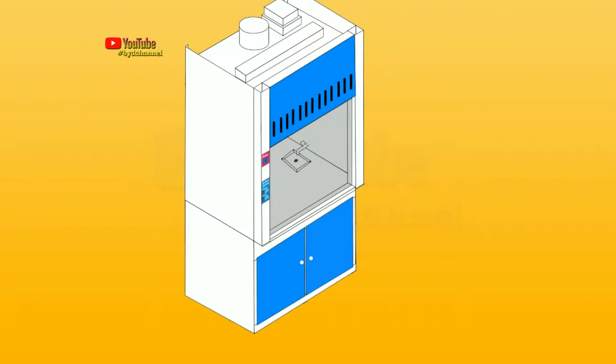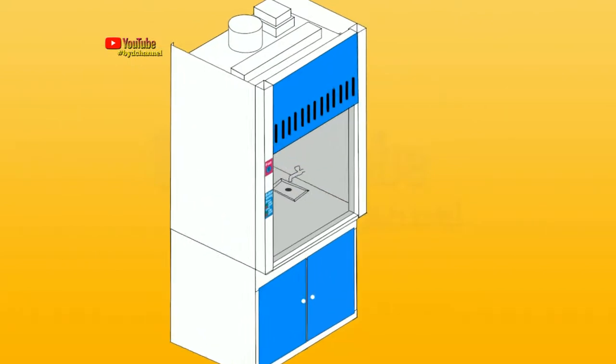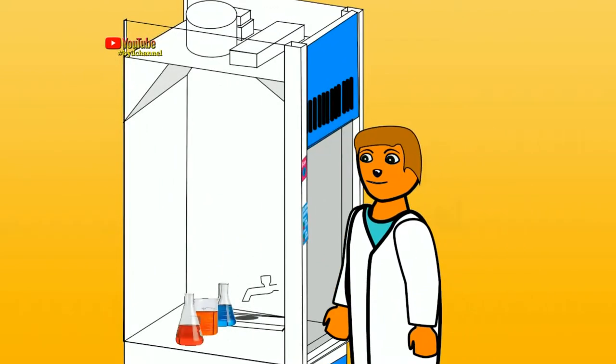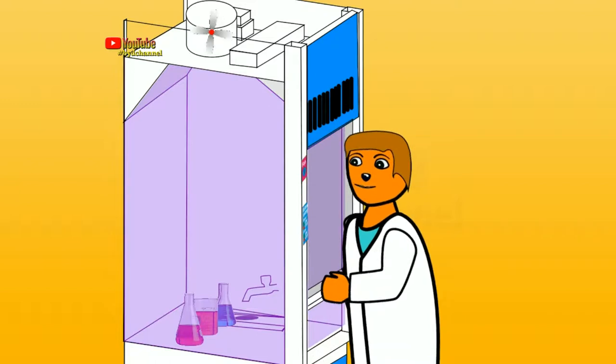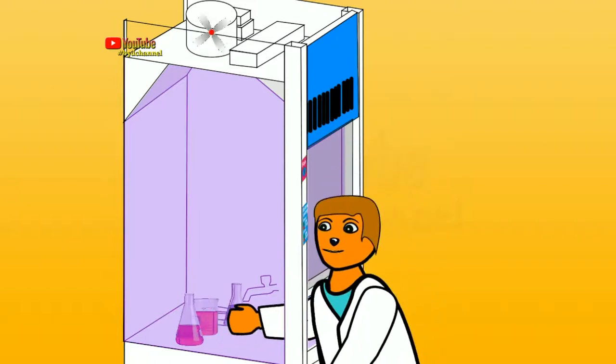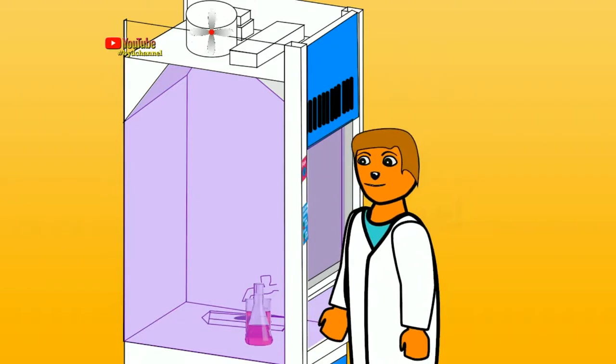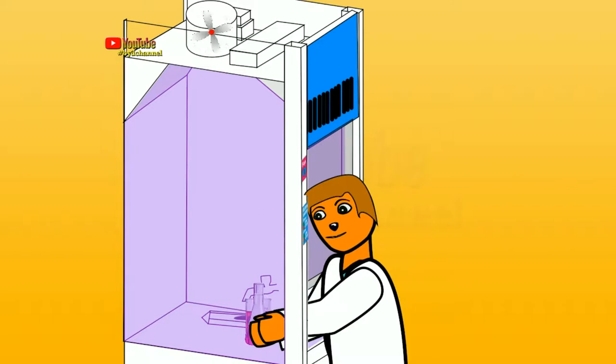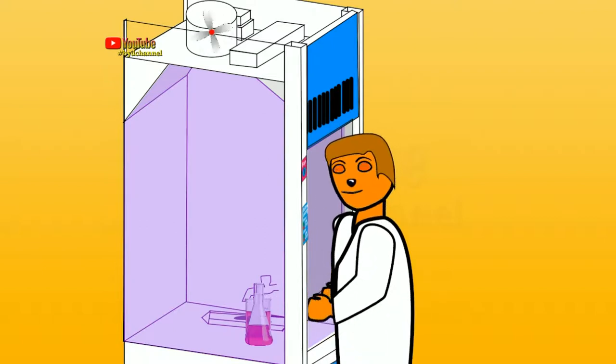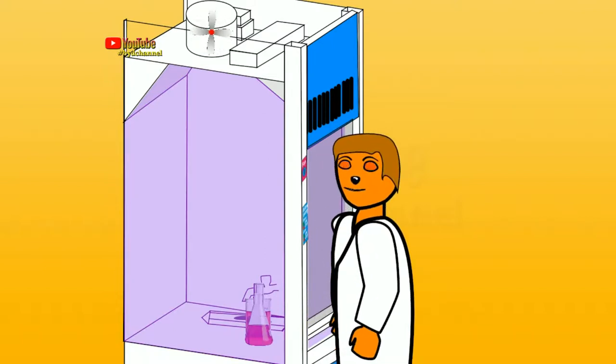How to use fume hood. Turn on the light. Turn on the blower switch. Press the sliding window as you wish. If the blower is already on, then start your work carefully. If the work is waiting while the reaction process is still running, lower the sliding window with an opening of about 10 centimeters from the table.